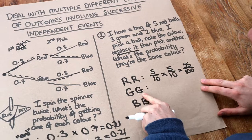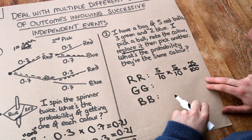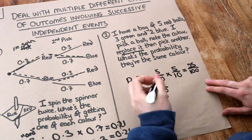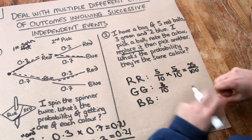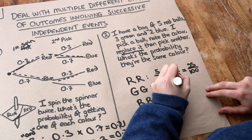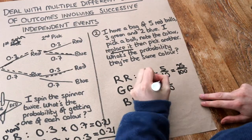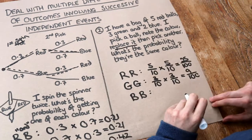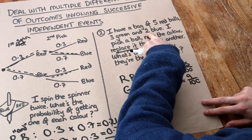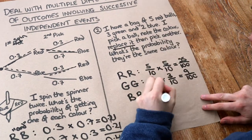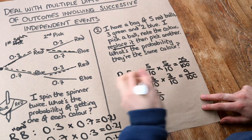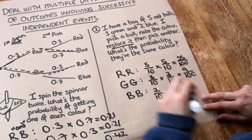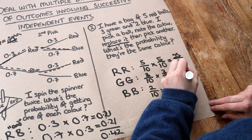What about green and green? The probability of getting green on the first pick is three out of ten. The probability of getting green on the second pick, because we put the green ball back, is still three out of ten — the same balls are still in the bag. Multiply them together: nine out of 100. Finally, blue and blue — two out of ten are blue, so it's two tenths. The second pick is still two tenths because we've still got ten balls with two blue. Multiply: four out of 100.